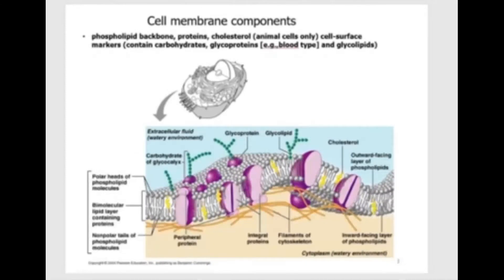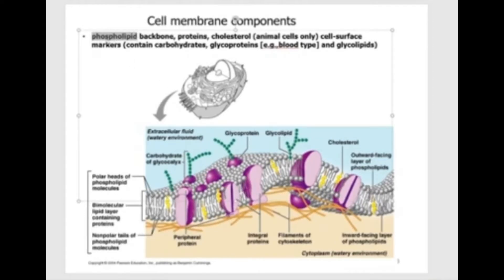Let's look at all the structures in the cell membrane or on its surface. There is actually a lot going on. So let's look at the backbone first. If you remember from the biomolecule chapter, the backbone is made up of a type of lipid — specifically a phospholipid — and it's a bilayer. The polar head contains the phosphate group, which is why it's polar, and then there are two nonpolar fatty acid tails. One layer faces one direction and the other faces the opposite. That's the phospholipid bilayer, the backbone for the cell membrane.